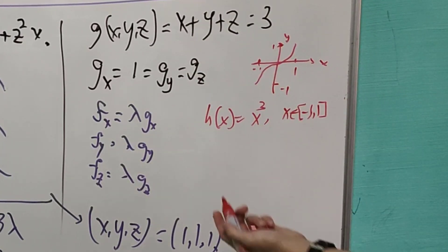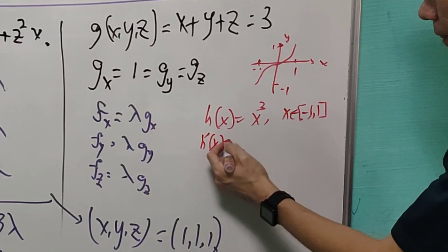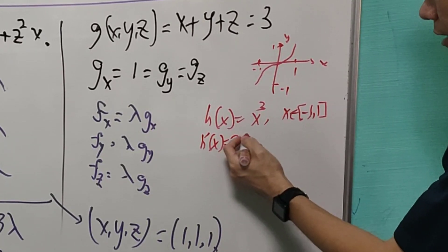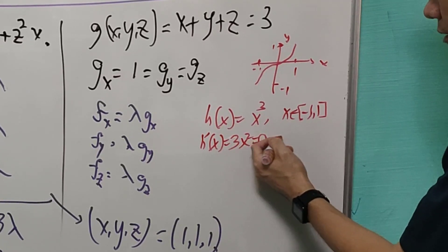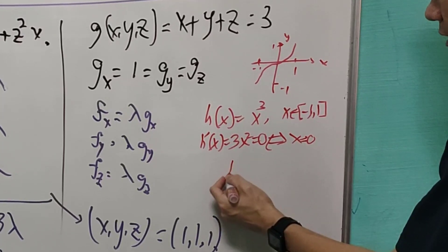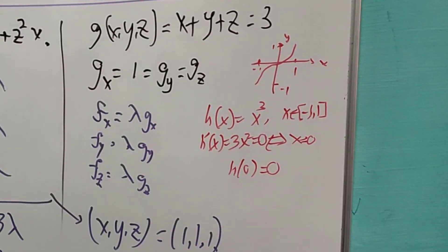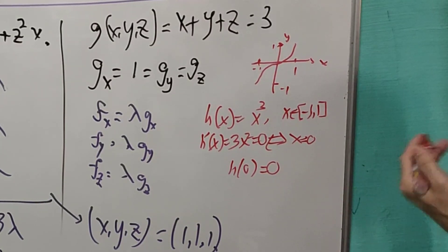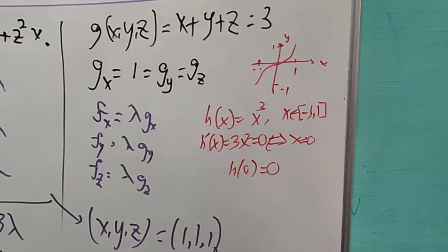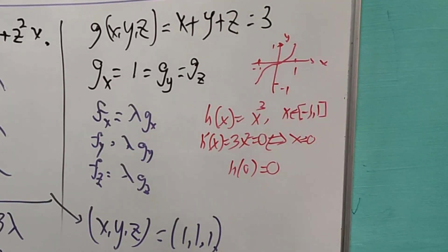So when we do all these things, we actually do something like differentiate it, and let it be 0, then we will have x is equal to 0. However, h of 0 equals to 0 may or may not be the maximum or minimum value for the function. And in this case, we know that the maximum value will be at the boundary.